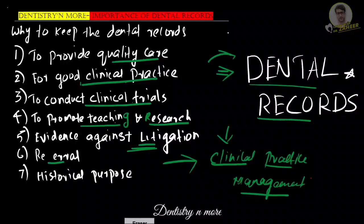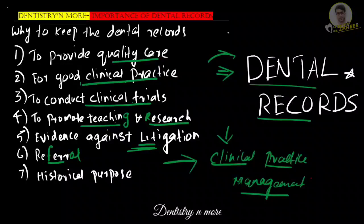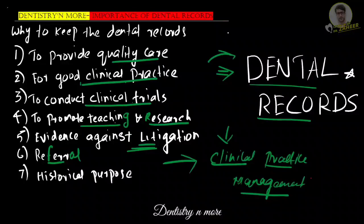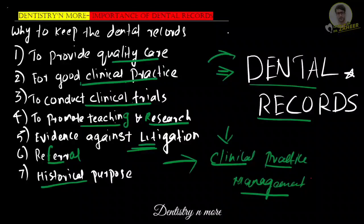Dental records also help in referrals. When we have the data, we can refer the patient to the next dentist or specialist without needing to explain anything — we simply send the patient along with all their records. Records are also important for historical purposes; in history, many people were identified through dental records, such as in the case of Adolf Hitler's dental records.